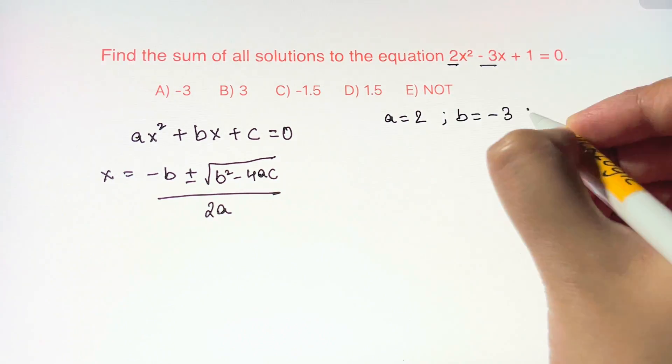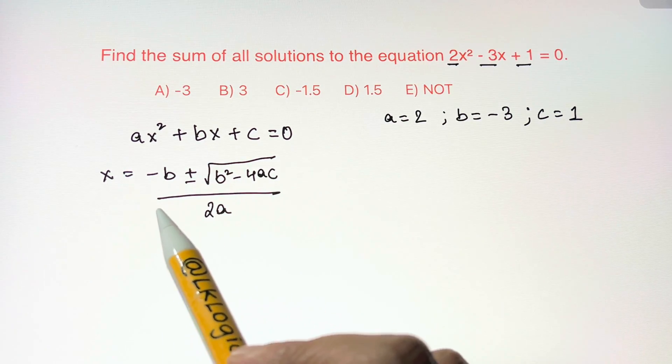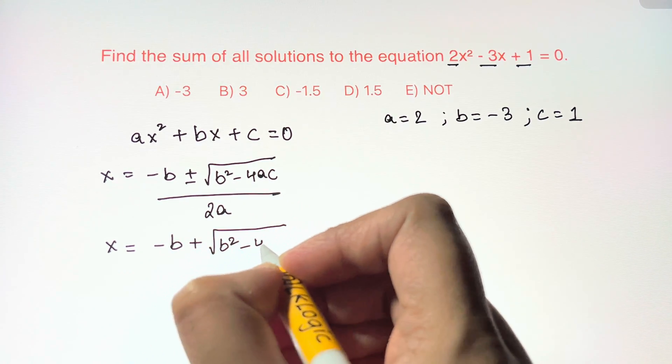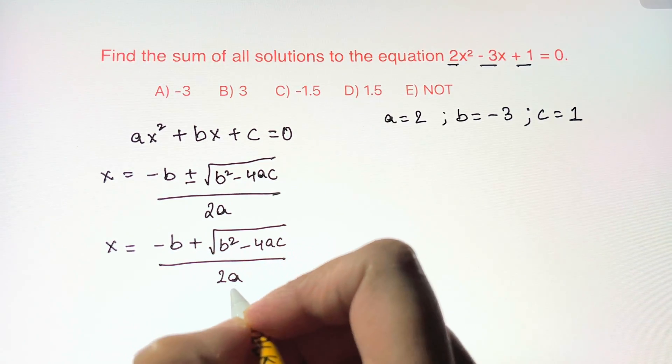So you can plug those values into the quadratic equation to get your two solutions and then you'll sum up those two solutions to get your answer. But you will be so much faster if you do it this way.